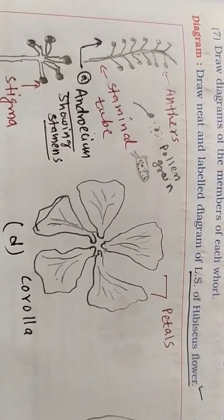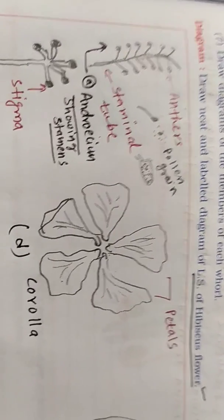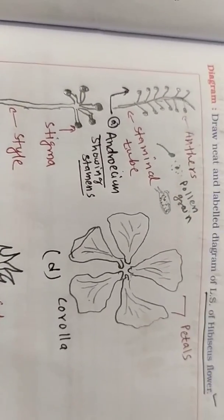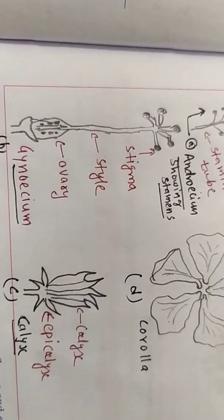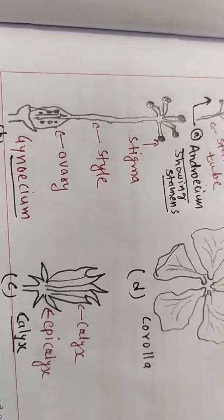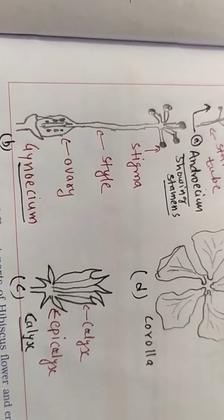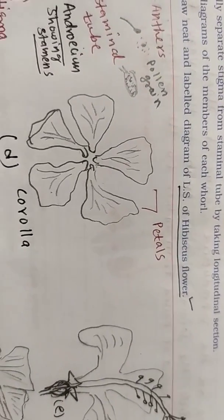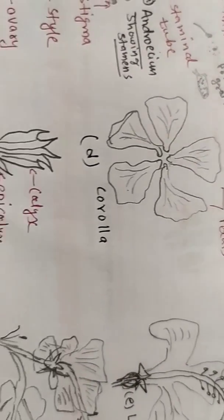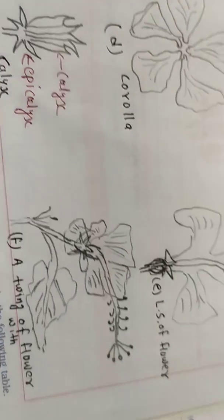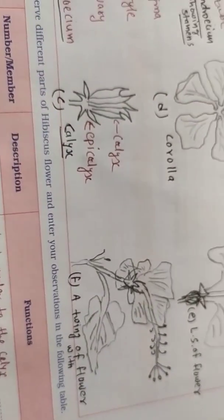The gynoecium is the female part, consisting of stigma, style, and ovary. The corolla consists of petals. Then there is the calyx, epicalyx, and calyx — and this is the flower.